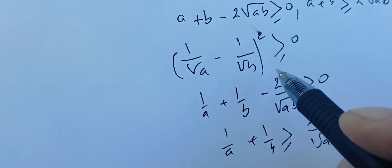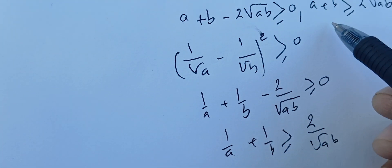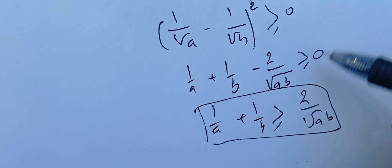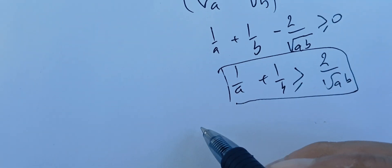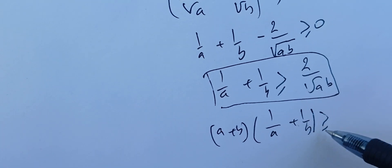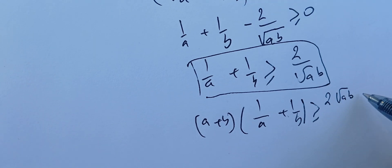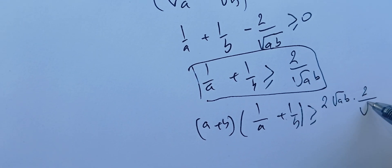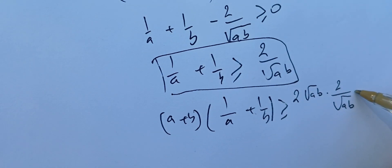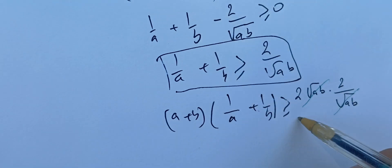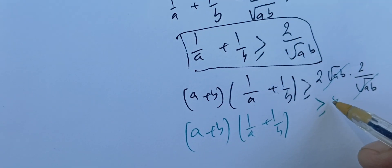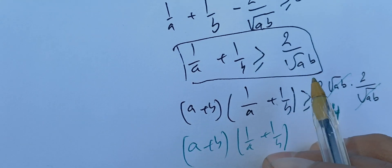We now have these two results: a + b ≥ 2√(ab) and 1/a + 1/b ≥ 2/√(ab). Since these numbers are positive, we can multiply them. We get (a + b)(1/a + 1/b) ≥ 2√(ab) times 2/√(ab). The square root of ab cancels since a and b are positive, giving us four. Therefore (a + b)(1/a + 1/b) ≥ 4.